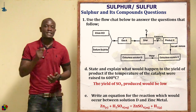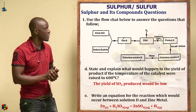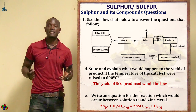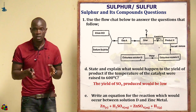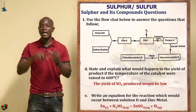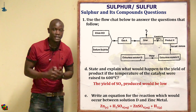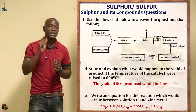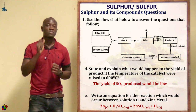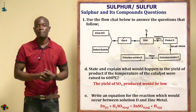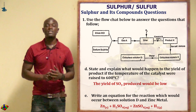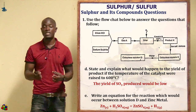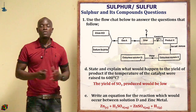Question D asks what happens to the yield of the product if the temperature of the catalyst is raised to 600°C. This is not the optimum condition — the optimum condition is 450°C at three atmospheres. If the temperature is increased beyond the optimum, there will be a very low yield of sulfur trioxide. Increasing the temperature causes the yield to go down.